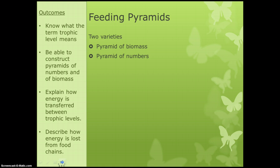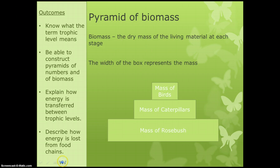To try and represent how much energy travels through these chains we can do something called pyramids. We can either do a pyramid of biomass or a pyramid of numbers. A pyramid of biomass is where we draw a box to represent the mass of the organism at each level. By biomass we just mean the dry mass of the living material at each stage — we take the organism, remove all the water from it, and then find out what its mass is, because that's a fair way to compare.